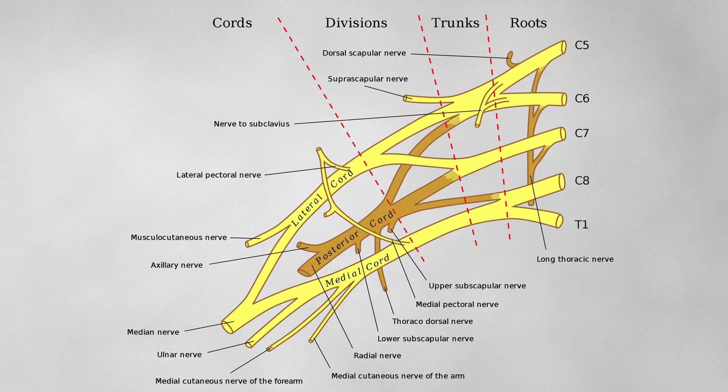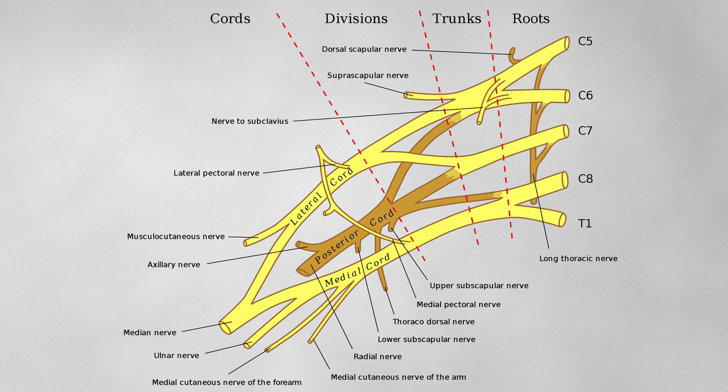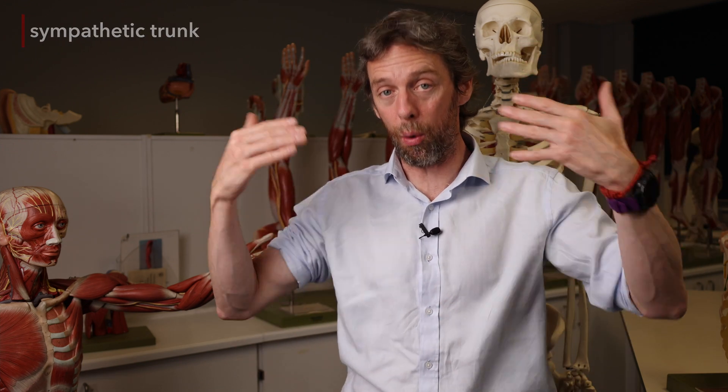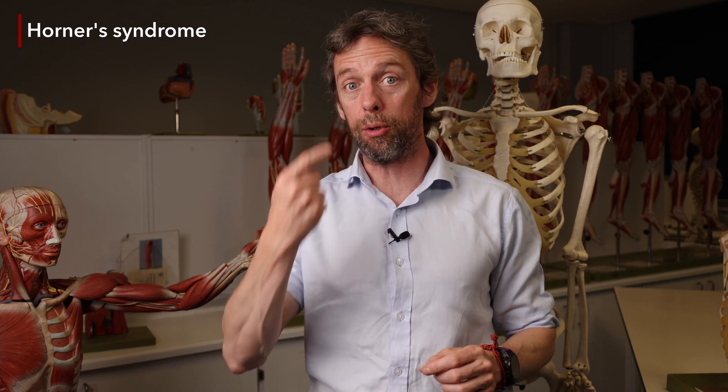Looking at the brachial plexus diagram again, consider that there's also a medial pectoral nerve there, which runs to pectoralis major and pectoralis minor — so those muscles could be affected. The severity of the injury will change depending on how close the injury is to the spinal cord. We have the sympathetic trunk coming out of T1 to T12 or L1 levels, so if the T1 root is injured, the sympathetic nerves from that root may also be injured. Those sympathetic nerves run up into the neck and head, which could give Horner's syndrome — constriction of the pupil and drooping of the eyelid.